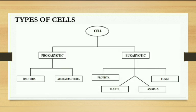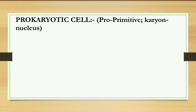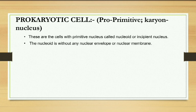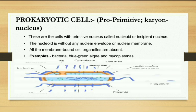Now, types of cells. Cells are basically of two types: number one, prokaryotic, and number two, eukaryotic. In prokaryotic we know two examples: bacteria and archaebacteria. In eukaryotic, we study plant and animal cells. Prokaryotic means 'pro' (primitive) + 'karyotic' (related to nucleus, as the study of nucleus is called karyology). These cells have a primitive nucleus called nucleoid or incipient nucleus. Nuclear membrane is absent, and all membrane-bound organelles like chloroplast and mitochondria are absent. Examples: bacteria, blue-green algae, mycoplasma.